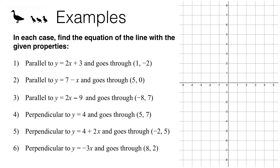In this video we're going to be looking at how to find the equation of a line with certain properties. In each question we're going to be given a point that we want the line to go through, and we're also going to be told that we want that line to be either parallel or perpendicular to a different line. Before continuing, make sure you are comfortable with straight line graphs from topic A9a and also with gradients of parallel and perpendicular lines from topic A9b.